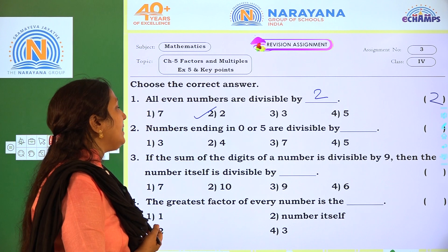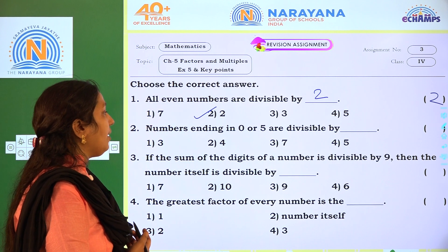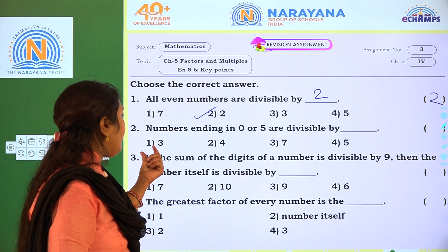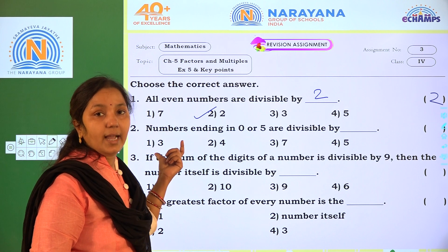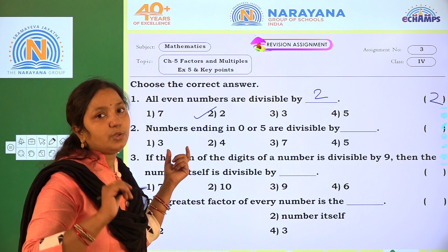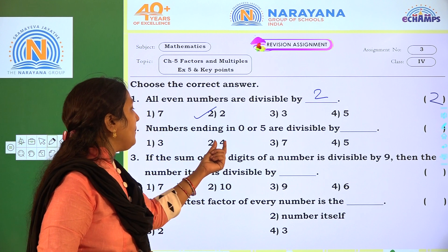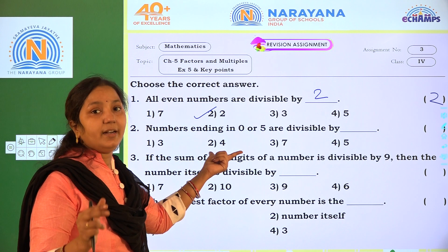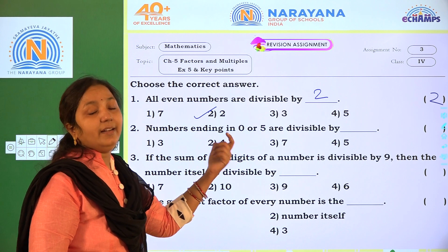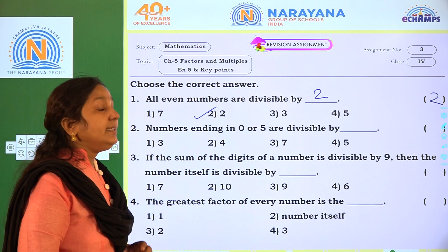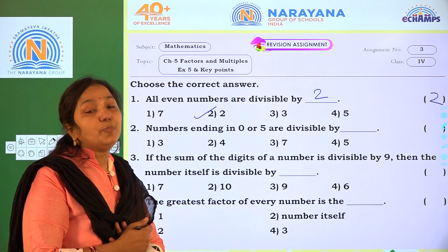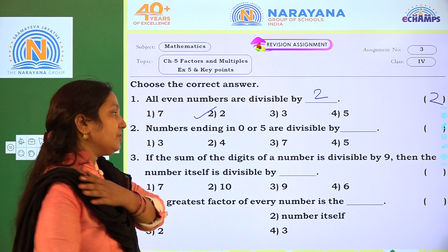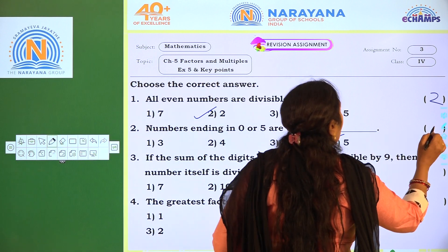Next one: numbers ending in 0 or 5 are divisible by — so which numbers can be divided by 3? Some of the digits only we can divide. Coming to 4, ending with 2 zeros are divisible by 4. Now 7, no children. And 5 — yes, the units place must be 0 or 5, it must be divisible by 5. So our option is 4.